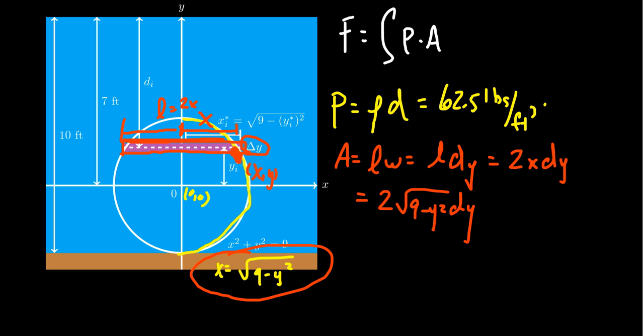Coming back to our pressure problem, we have the density of 62.5 pounds per cubic foot. But what about the depth? The depth is the distance from the surface of the water to a typical cross section. If we go from the x-axis up, this is what y means. We have to take something minus y. That something is going to be 7.